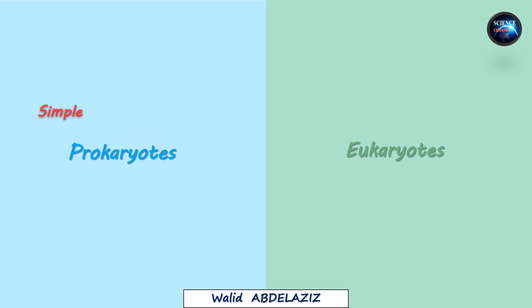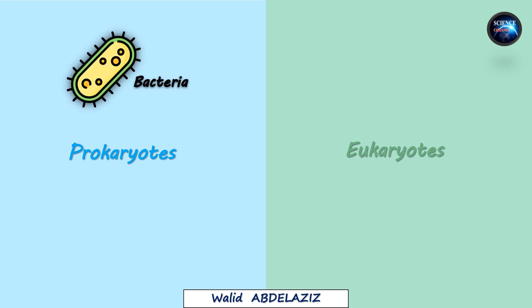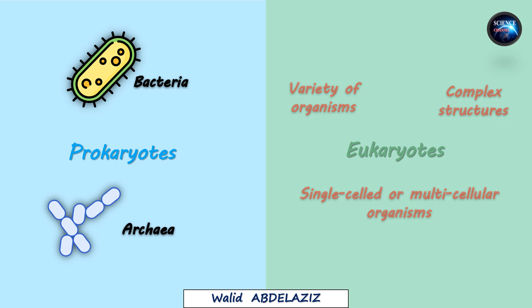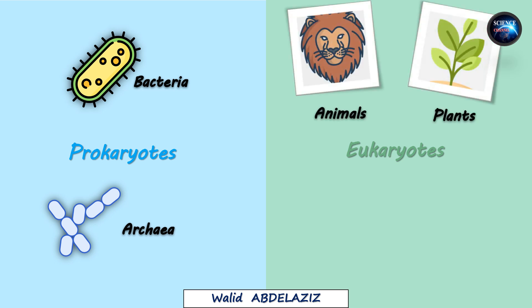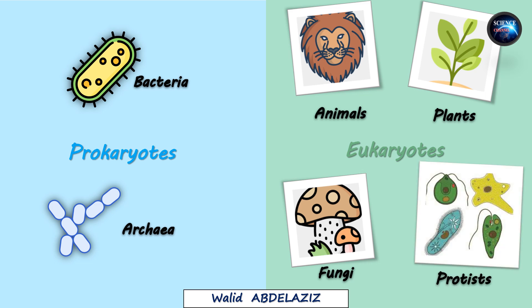Prokaryotes are the simplest and most ancient forms of life. They are single-celled organisms, and the two primary groups of prokaryotes are bacteria and archaea. Eukaryotes, on the other hand, include a wide variety of organisms with complex structures. They can be single-celled or multicellular, and include animals, plants, fungi, and protists.